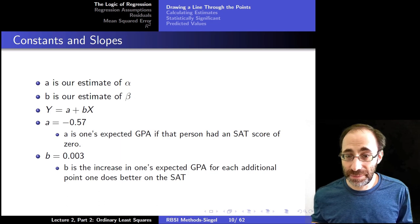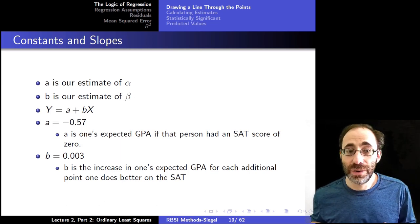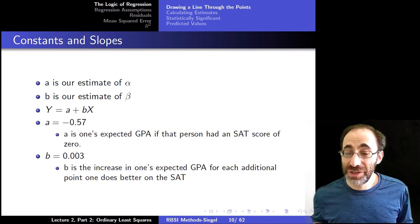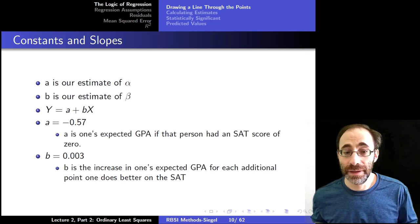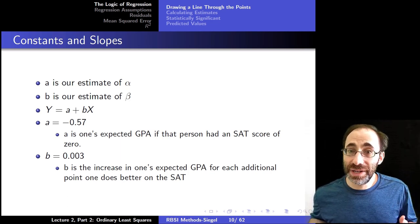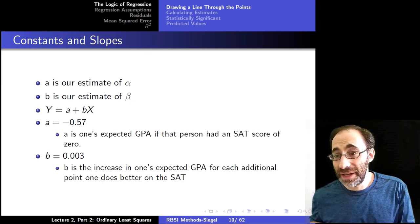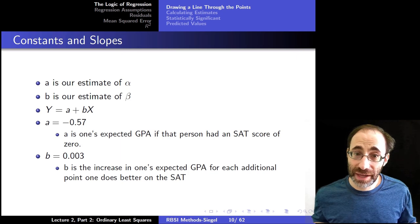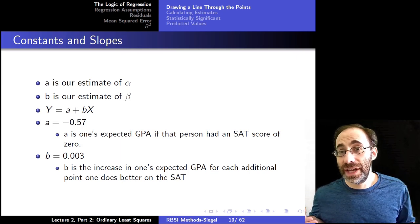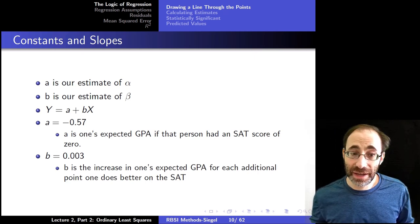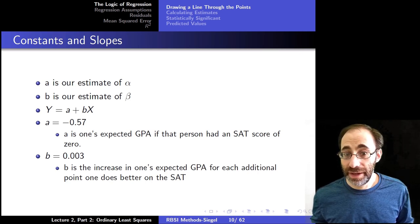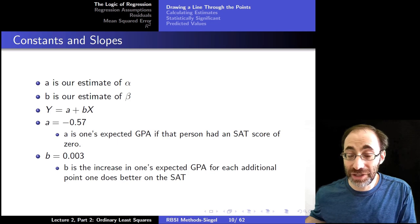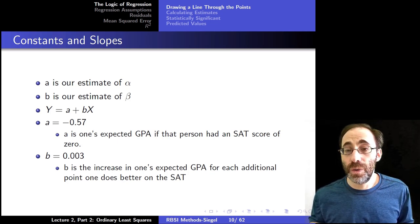We have Y equals A plus BX, or Y equals α̂ plus β̂X. Our estimate of α̂ is negative 0.57, which is the expected GPA if a person had an SAT score of 0. The β̂ is 0.003, which is the increase in one's expected GPA for each additional point that one does better on the SAT. It's the slope of the line that relates GPA to SAT scores. If you increase your SAT score by a hundred points, you should increase your expected GPA by a hundred times 0.003, or by 0.3.